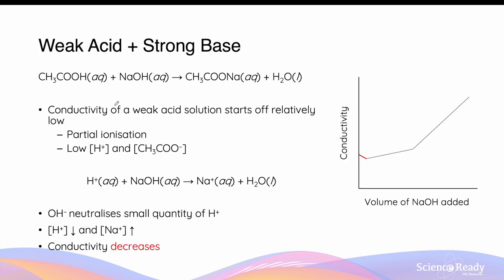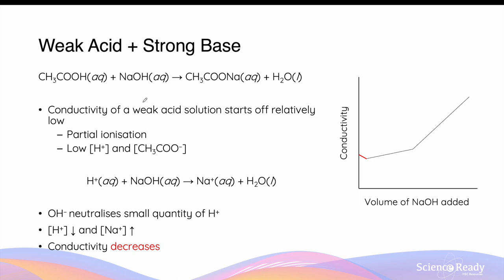The conductivity graph for a weak acid and strong base titration looks different. Suppose we have acetic acid in the beaker and sodium hydroxide being added from the burette, producing sodium acetate and water. In the beginning, the conductivity is relatively low because a weak acid only undergoes partial ionization, producing a relatively low amount of hydrogen ions and acetate ions. The addition of sodium hydroxide causes the small amount of hydrogen ions to decrease in concentration as they are neutralized by hydroxide, resulting in a small decrease in conductivity.